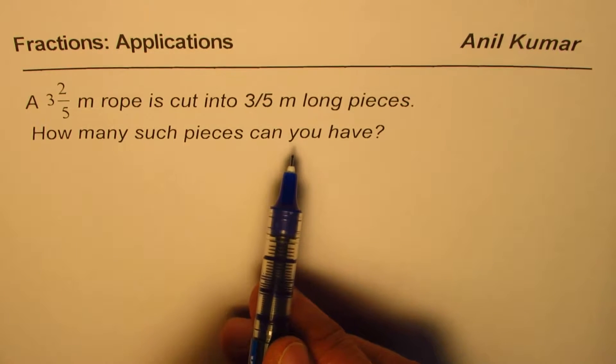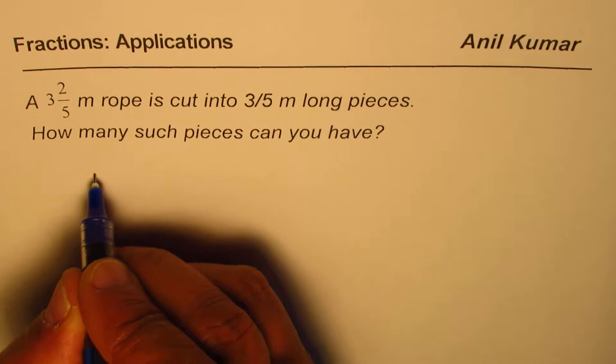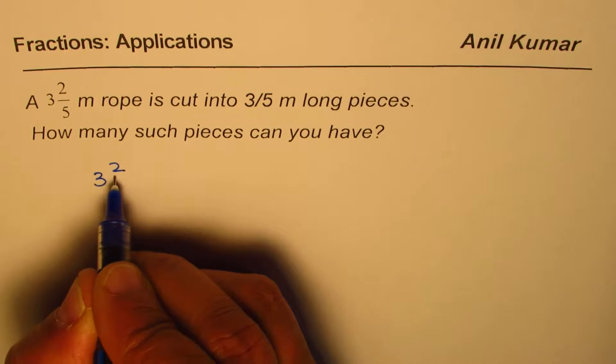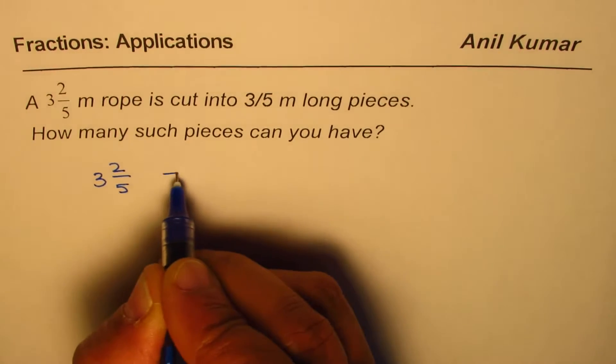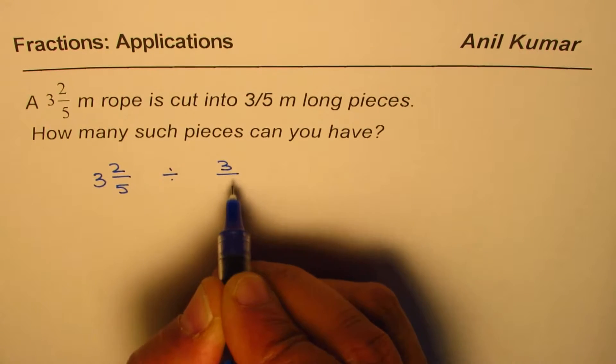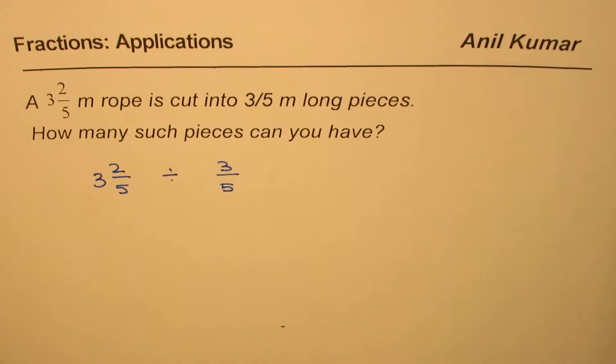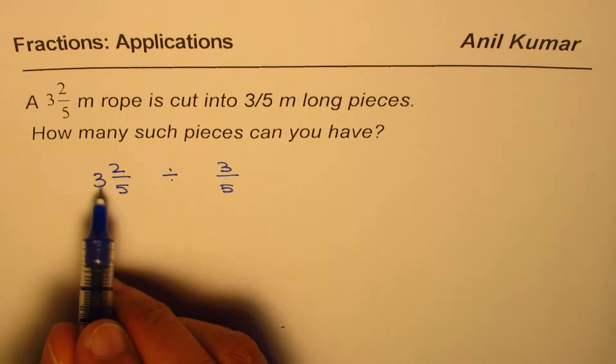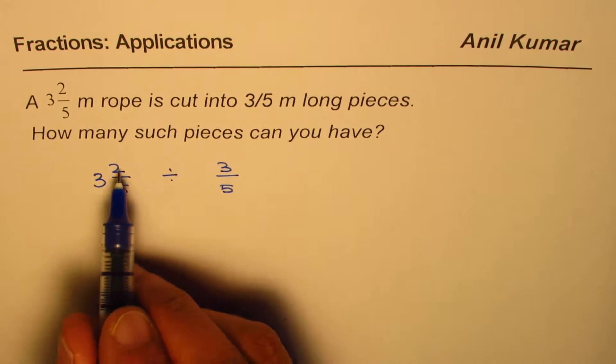So to find the number of pieces, what should we do? We should divide 3 2/5 by 3/5. That is what we should do. To divide, let us first write this as improper fractions.